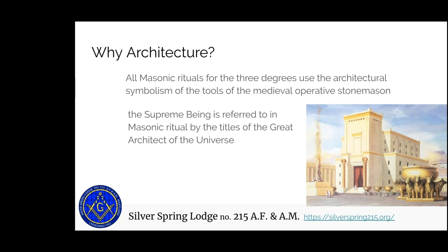So why architecture? In all Masonic rituals for the three degrees, we use architectural tools and the symbolism of those tools of the medieval operative stonemasons. We've got the hammer or the common gavel, we've got the square, we've got compasses — and these were all the tools traditionally used by stonemasons, builders of temples, cathedrals, any building. These were all tools that were part of the trade.